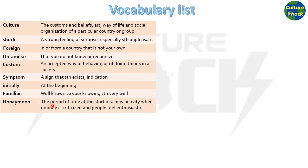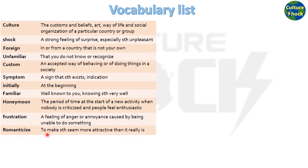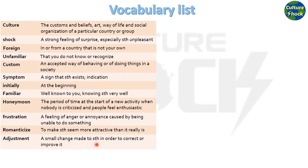Honeymoon: the period of time at the start of a new activity when nobody is criticized and people feel enthusiastic. Frustration: a feeling of anger or annoyance caused by being unable to do something. Romanticize: to make something seem more attractive than it really is. Adjustment: a small change made to something in order to correct or improve it. Comfortable: making you feel physically relaxed in a pleasant way.